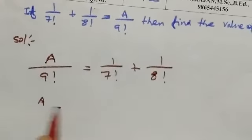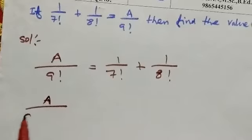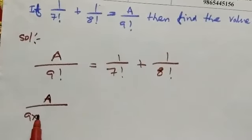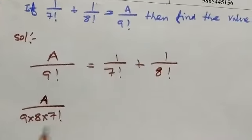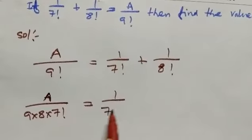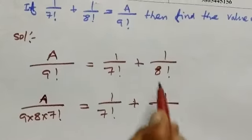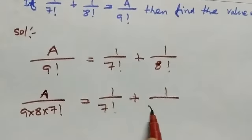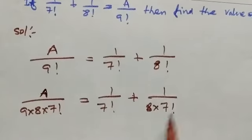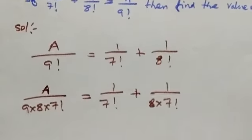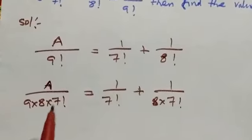So a by 9 factorial — then 9 into 8 into 7 factorial equals 1 by 7 factorial plus 1 by 8 factorial, then 8 into 7 factorial. So how many 7 factorials then?